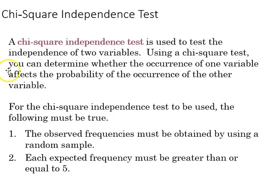What we're doing with the chi-square independence test is seeing if one variable influences another. If they don't, then they are independent, hence the name independence test.